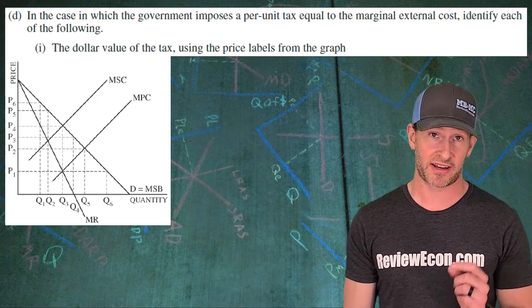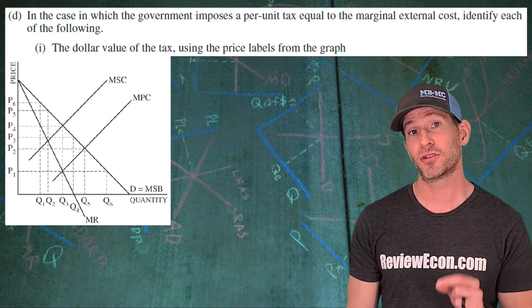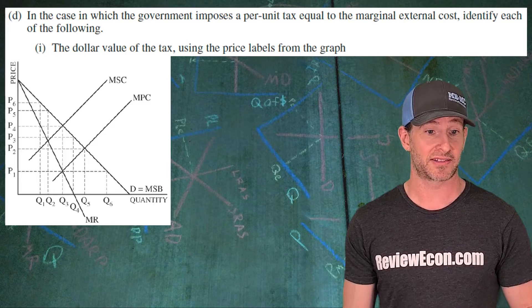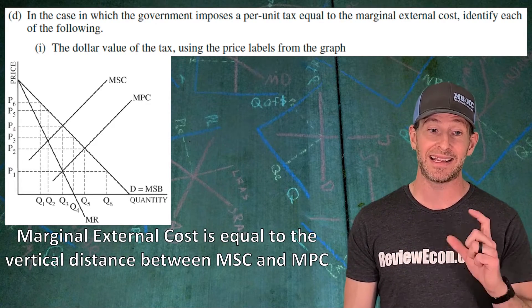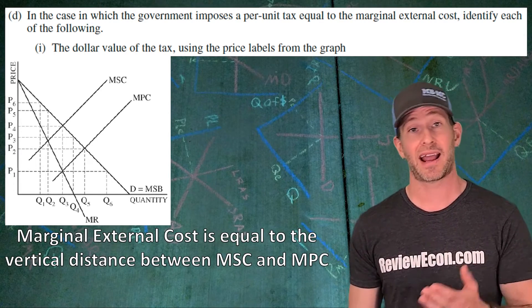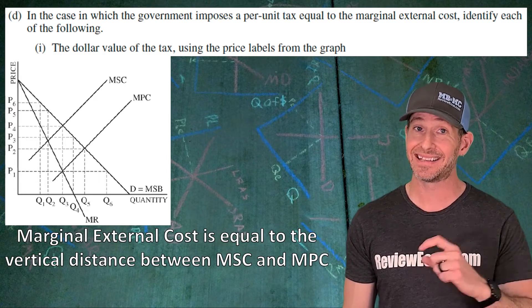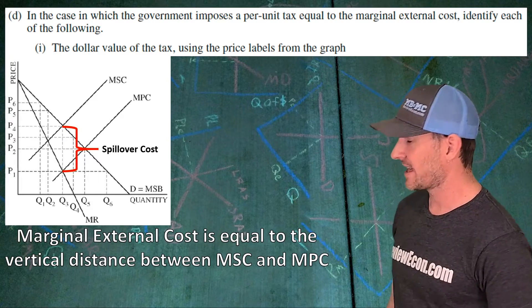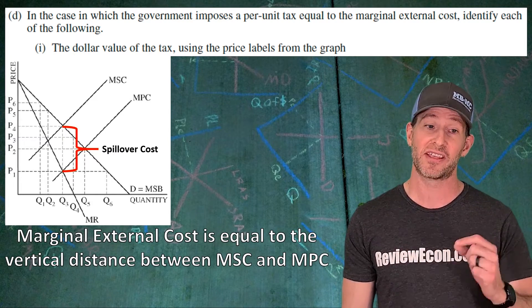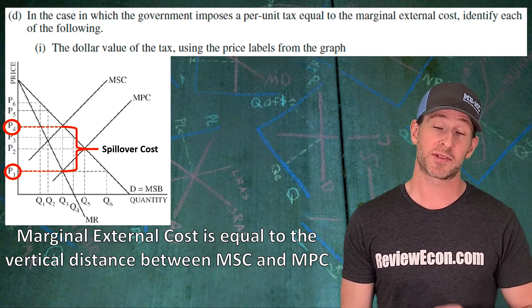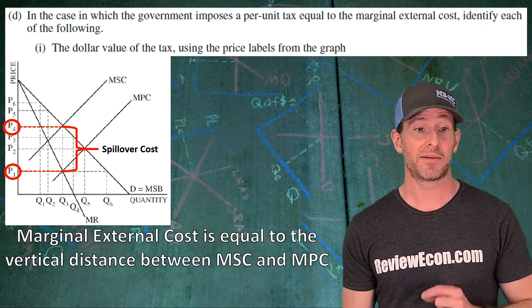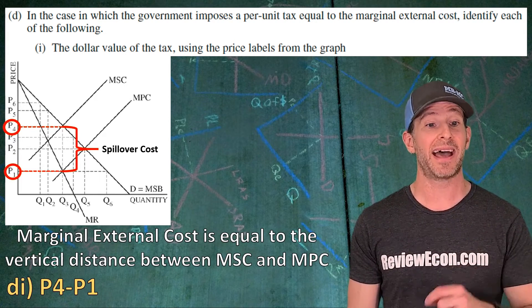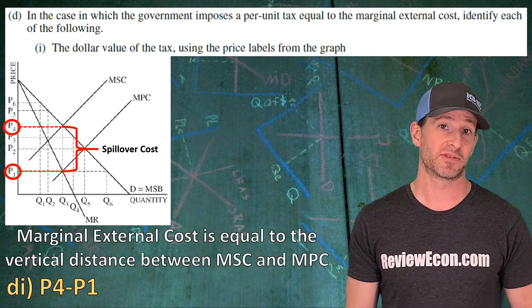For part D, the government is going to impose a per unit tax on this product equal to the marginal external cost. The marginal external cost is the vertical distance between the marginal social cost and the marginal private cost — that spillover cost identified earlier. We can see the vertical distance between those two curves by heading over to the axes: it is the difference between P4 and P1. Set it up as P4 minus P1, and that is the dollar value of the tax using the labels on the graph.